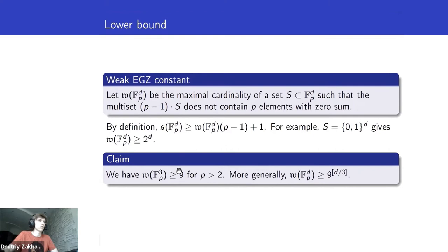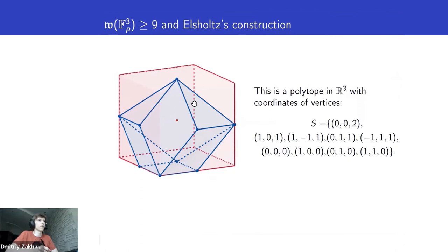Now I will show that for d equals 3, we have that this constant is at least 9, for p at least 3 in this case. And from this you can obtain the general bound that this constant is at least 9 to the d over 3, by just taking a Cartesian product of these constructions which I will provide in the next slide. And it can be easily seen that this problem is stable under taking Cartesian products. So here's the construction. On the left-hand side you see some polytope in three-dimensional space. On the right I wrote down its vertices, just for the sake of it.